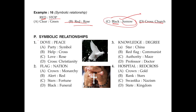A dove is white in color and represents peace. A party symbol has no specific meaning here. Cross and help could be right but the sequence is not correct — cross should be on one side and help on the other. Love and rose, and cross and Christianity: cross is the object and Christianity is the religion it represents, so cross and Christianity is the right answer.